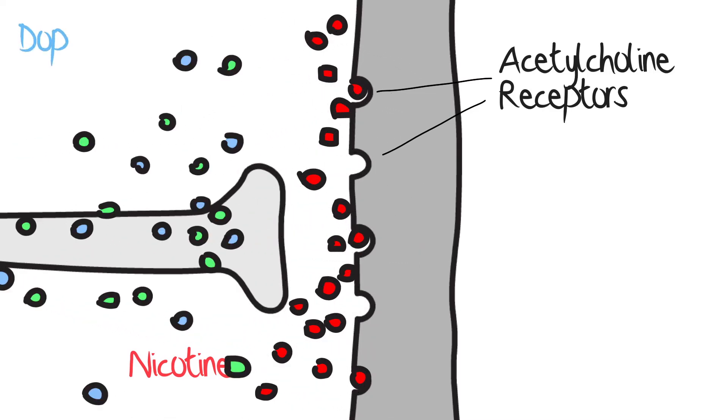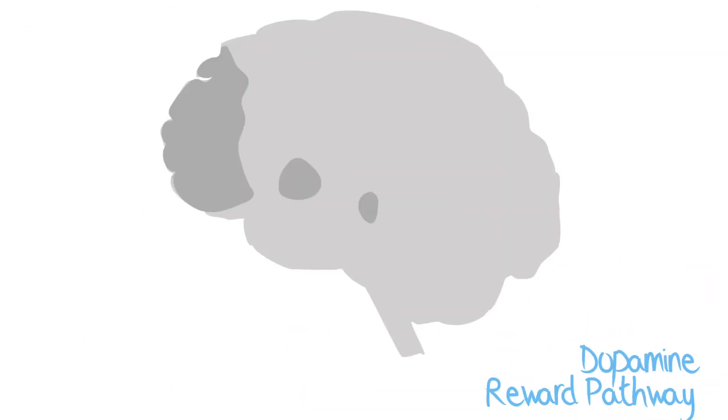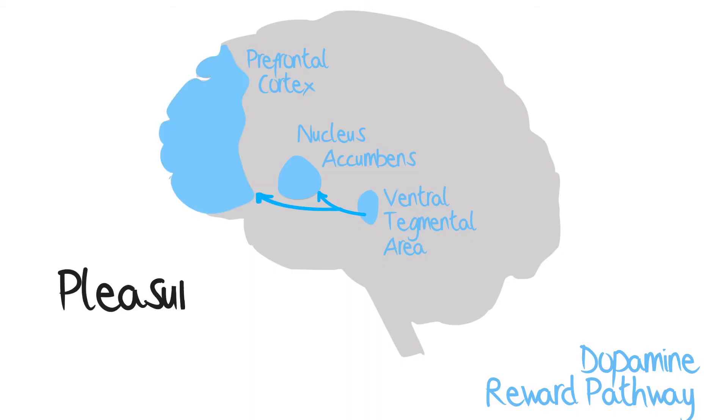One of these neurotransmitters, dopamine, causes the experience of pleasure through the dopamine reward pathway, which contributes to tobacco addiction. This pathway is located in the middle of the brain, where nicotine binds to neurons at the ventral tegmental area, causing a release of dopamine at the nucleus accumbens and prefrontal cortex. While being responsible for the sensation of pleasure, dopamine also suppresses appetite.